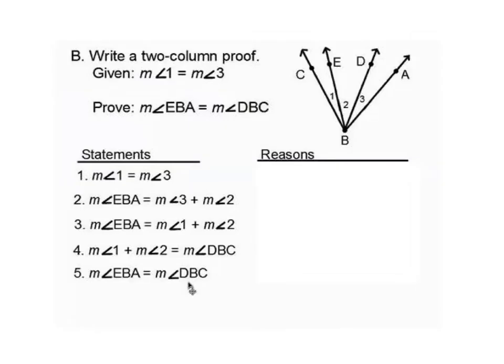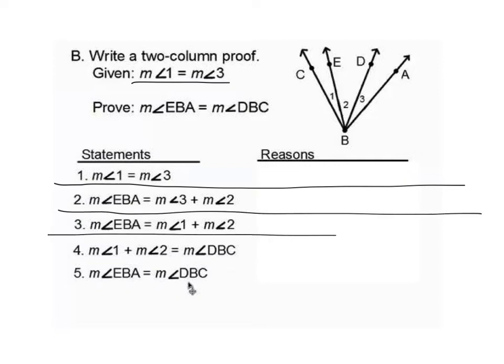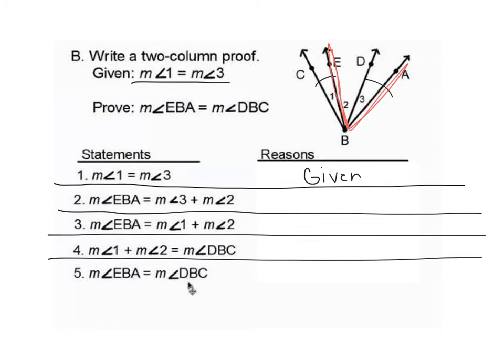Be ready to fill in a proof. I have my given. Angle 1 is congruent to angle 3. The line for number 1 is going to be given. Go mark it on your diagram. Angle 1 is going to go to angle 3. Number 2. Why is angle 3 plus angle 2 equal to angle EBA? Why is 2 plus 3 equal to the red angle? That is by the angle addition postulate. And then angle EBA is equal to angle 1 plus angle 2.